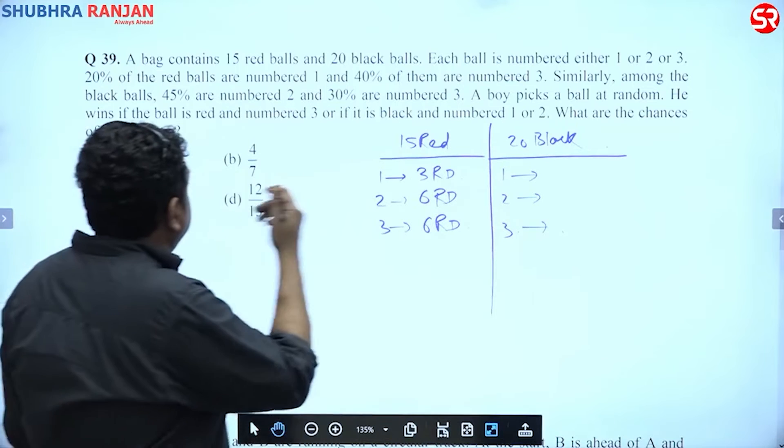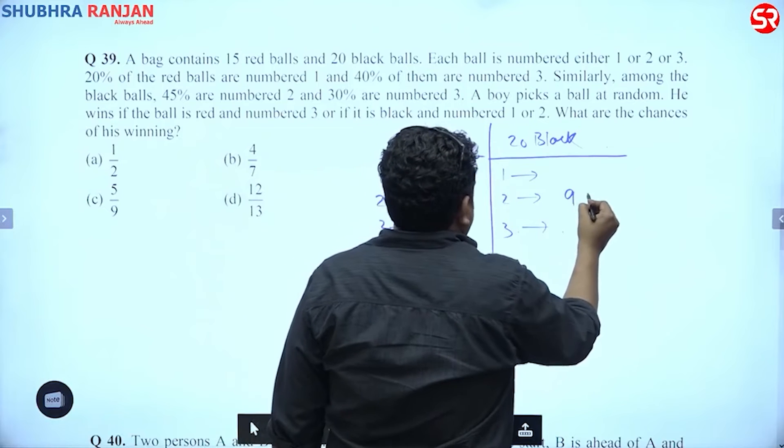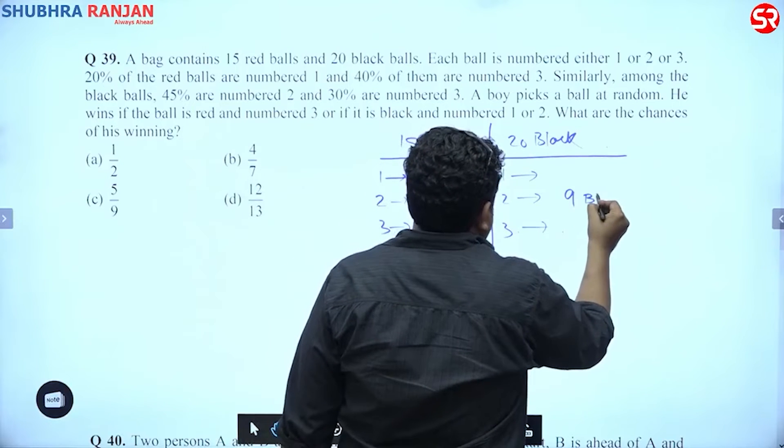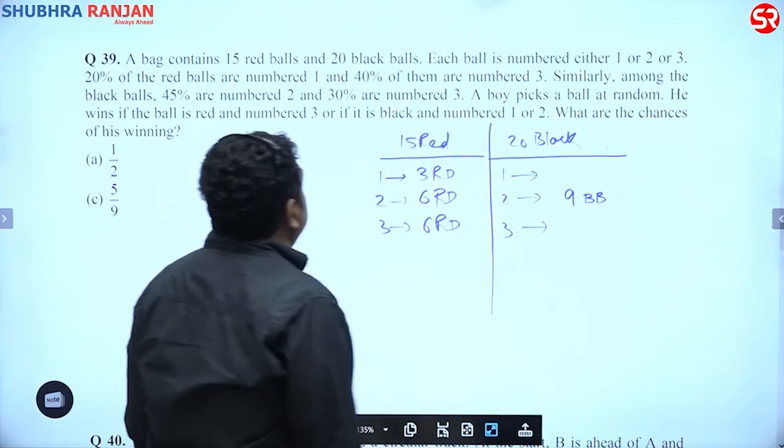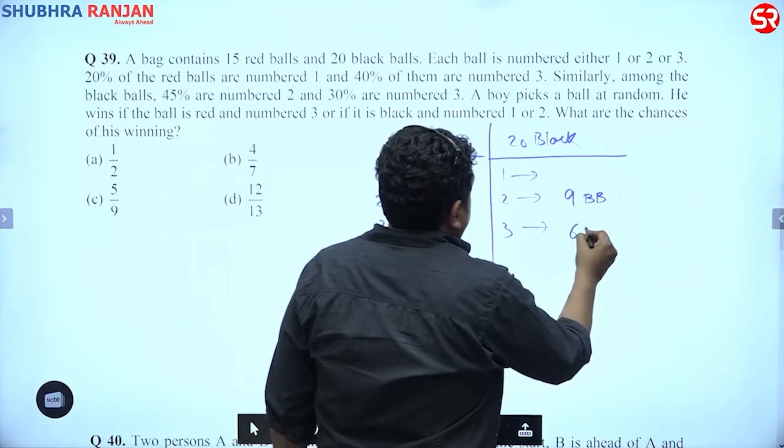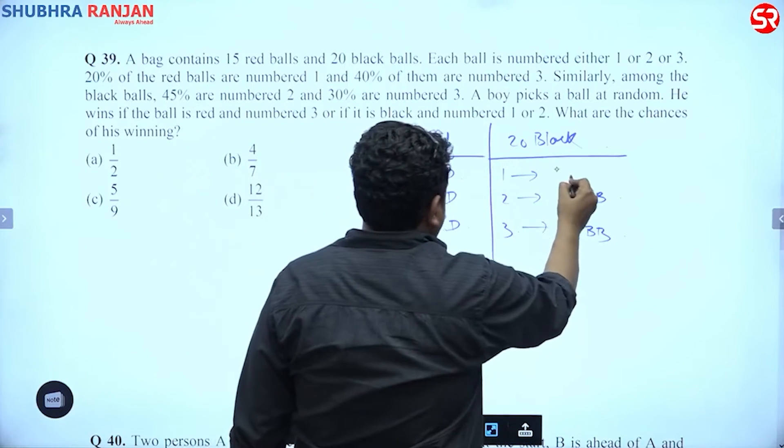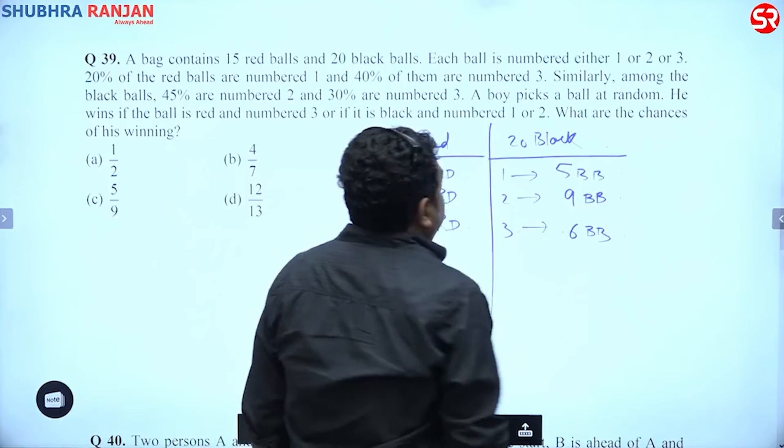45% of 20, guys, is 9. So 9 black balls are rank 2. And 30% would be 6 black balls rank 3. So remaining would be 5 black balls, right? Remaining would be 5 black balls.